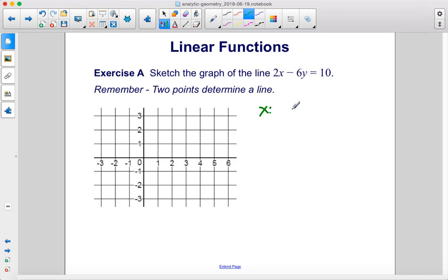So the x intercept is going to be when y is 0. So 2x minus 6 times 0 equals 10. That goes away. 2x equals 10, x equals 5. So when y equals 0, x equals 5.